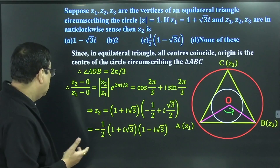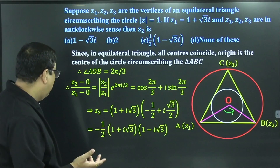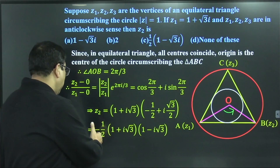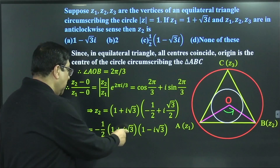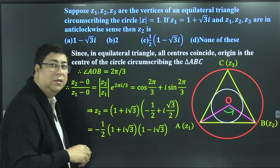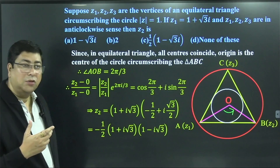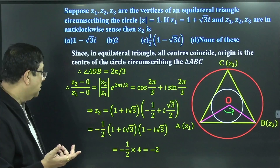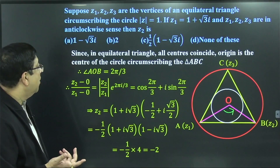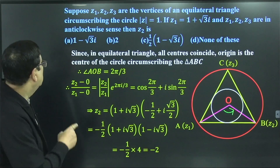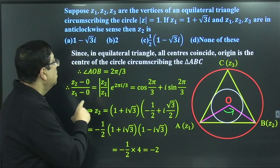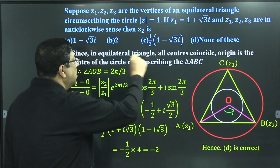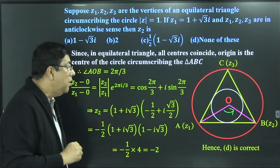So after simple calculation, taking half common and using the difference of squares, the answer comes to be minus 2. There is an option for minus 2, so the correct option is option D.